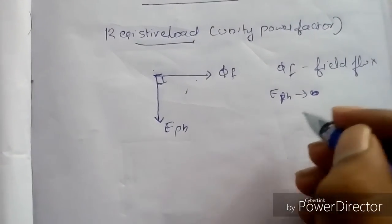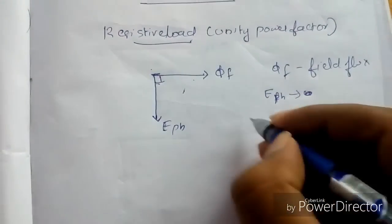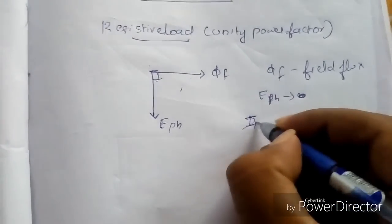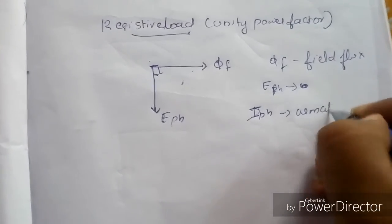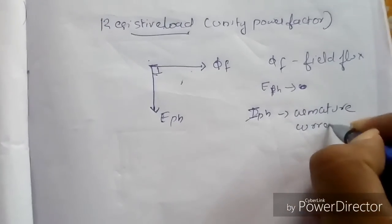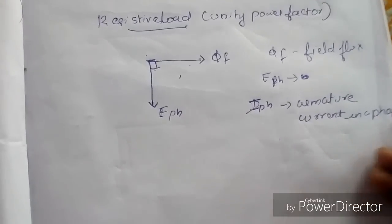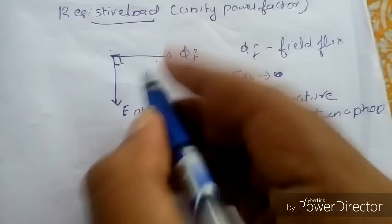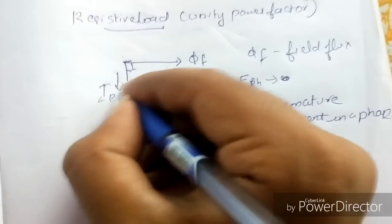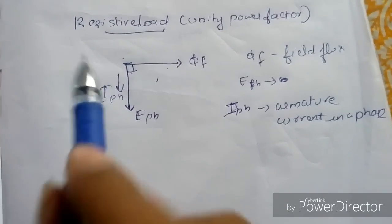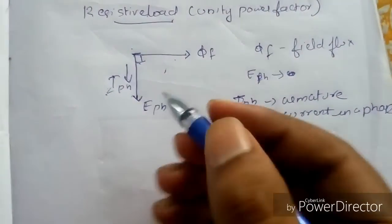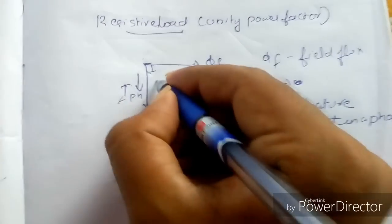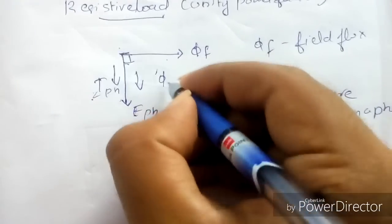This EMF induced on the armature will drive a current — I phase, the armature current in a phase. This armature current will be in phase with the induced EMF. And this induced armature current will create an armature flux — let it be phi A — and it is also in phase with the armature current.